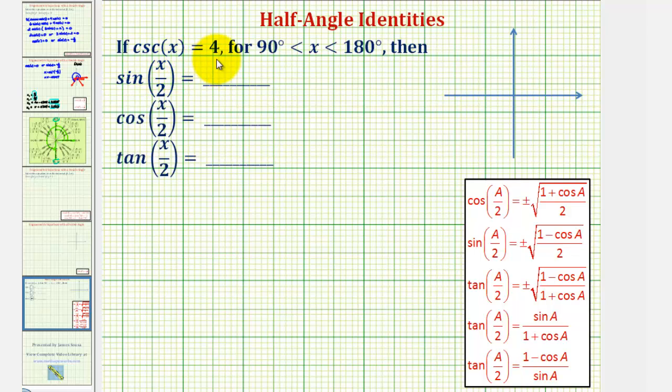We're given cosecant x equals four for some angle between 90 and 180 degrees, which means it terminates in the second quadrant.